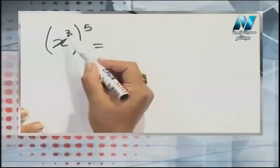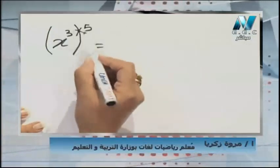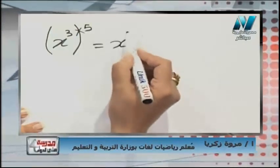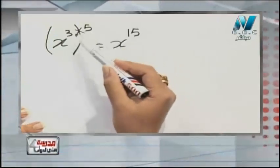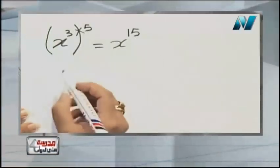Let's see the new rule. If we have x power 3, all to the power 5 — that is, a power of a power — we multiply them: 3 times 5 equals 15. So it will be x power 15. Our new rule: power of the power, make them times.